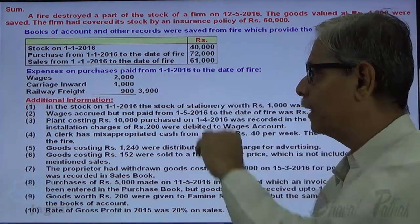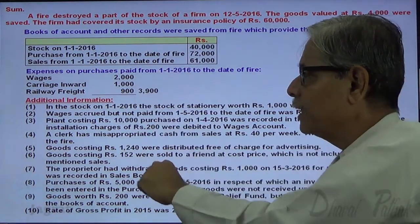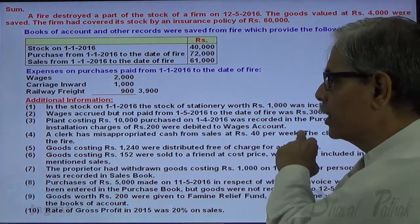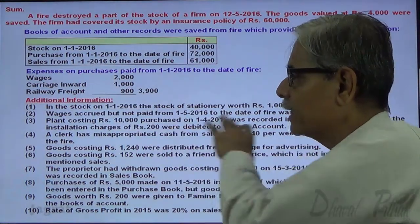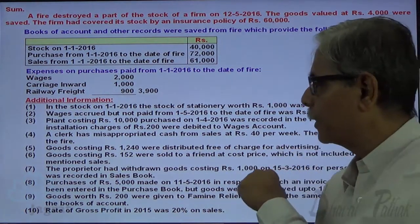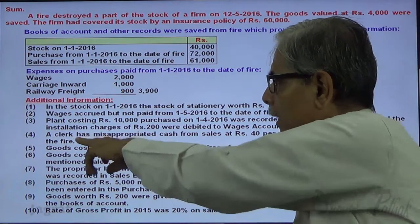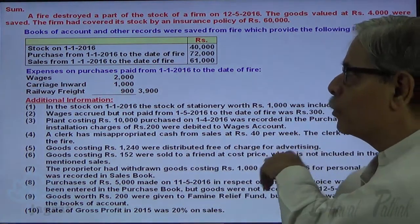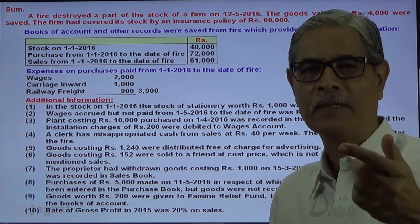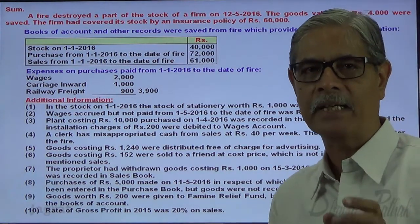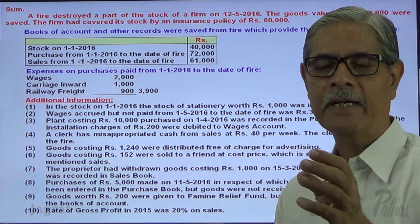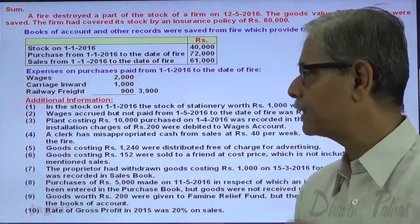Stock includes stester stock — remove it. Wages accrued should be added to wages. Plant costing 10,000 included in purchases — remove it from purchases. Installation charges thereof included in wages — remove them. Goods costing 1,250 distributed as samples — record on the credit side of the trading account. A clerk has misappropriated cash sales of 40 per week, so find the number of weeks until the date of fire, multiply by 40 to get the misappropriated sales amount, and add it to sales because the goods have already left the premises.